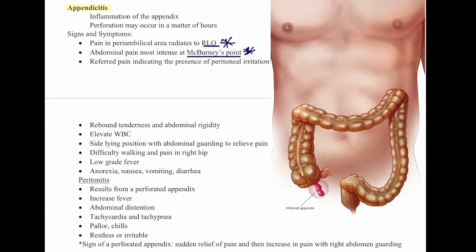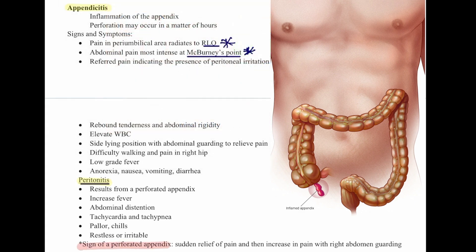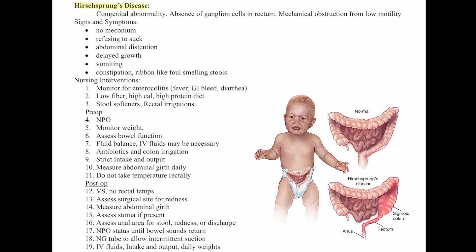Additional symptoms include anorexia, nausea, vomiting, and diarrhea. Peritonitis can result from a perforated appendix and presents with increased fever, abdominal distention, tachycardia, tachypnea, pallor, chills, restlessness, or irritability. An important sign of a perforated appendix is sudden relief of pain followed by an increase in pain with right abdominal guarding.